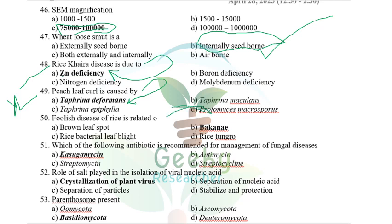Foolish seedling disease of rice (Bakanae disease) is related to gibberellin. Infected plants produce the growth promoter gibberellin, first discovered by Kurosawa in 1926. Bakanae disease is caused by Fusarium moniliforme — plants produce more tillers of greater height but no grains, hence 'foolish seedling.' This foolish disease of rice is related to Bakanae disease.